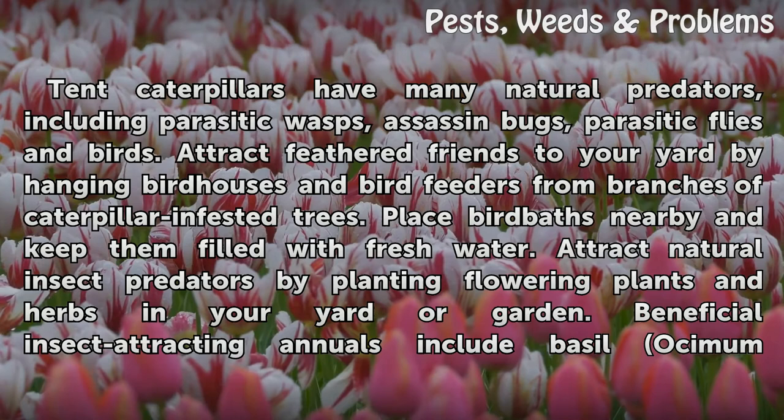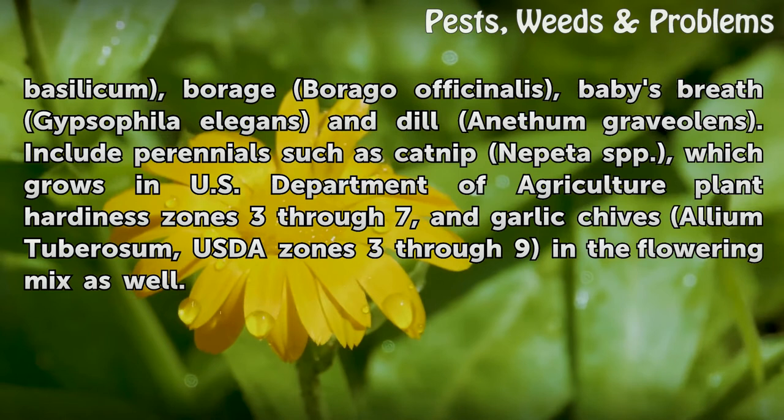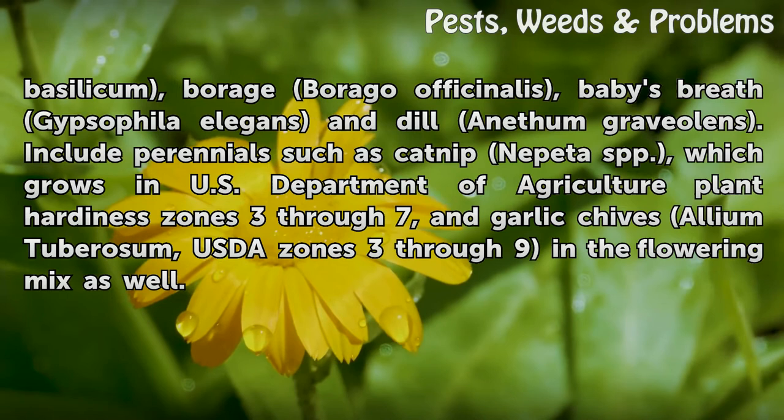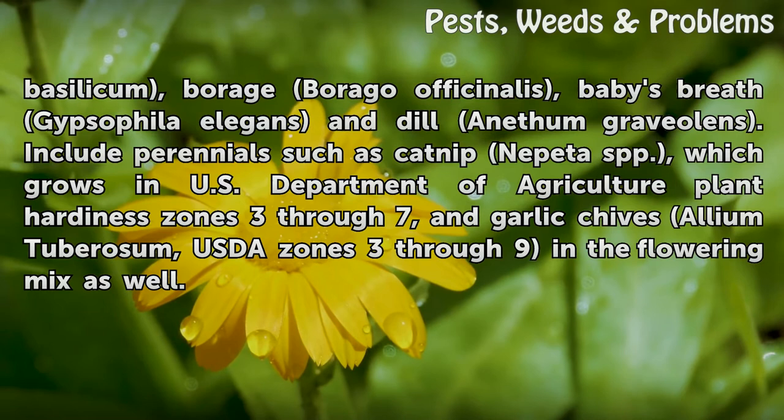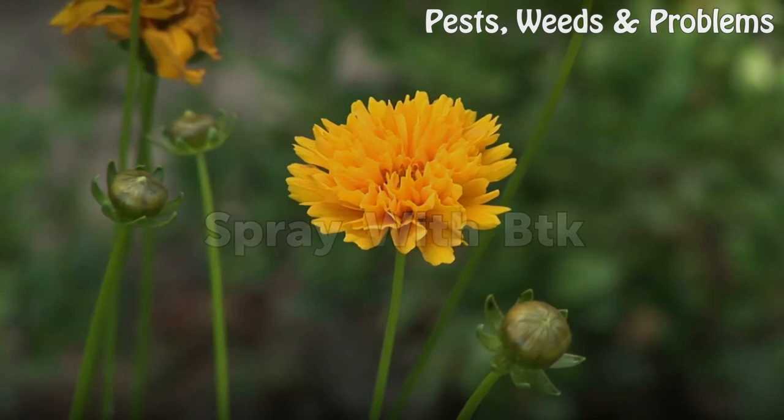Beneficial insect-attracting annuals include basil (Ocimum basilicum), borage (Borago officinalis), and baby's breath (Gypsophila elegans). Perennials include catnip (Nepeta spp.), which grows in USDA plant hardiness zones 3 through 7, and garlic chives (Allium tuberosum), USDA zones 3 through 9, in the flowering mix as well.